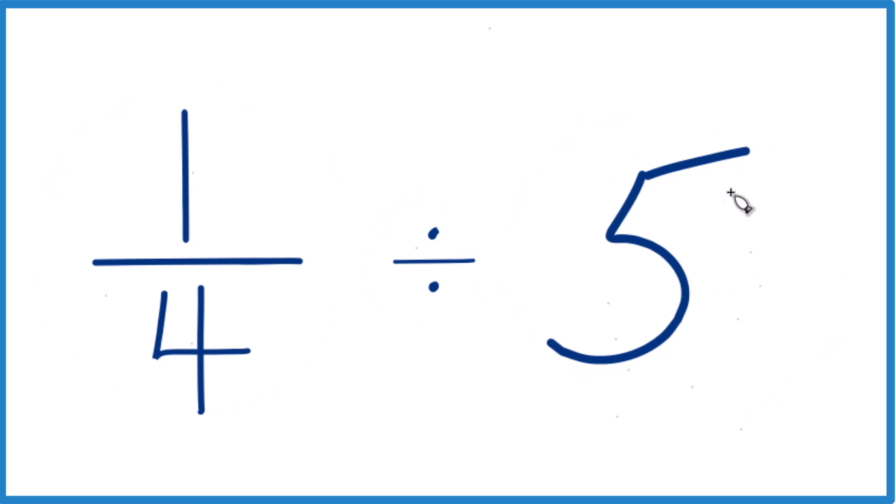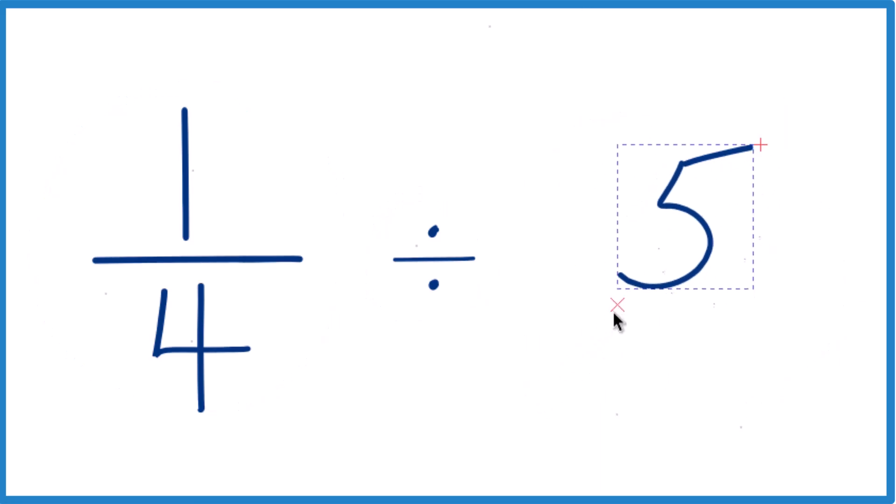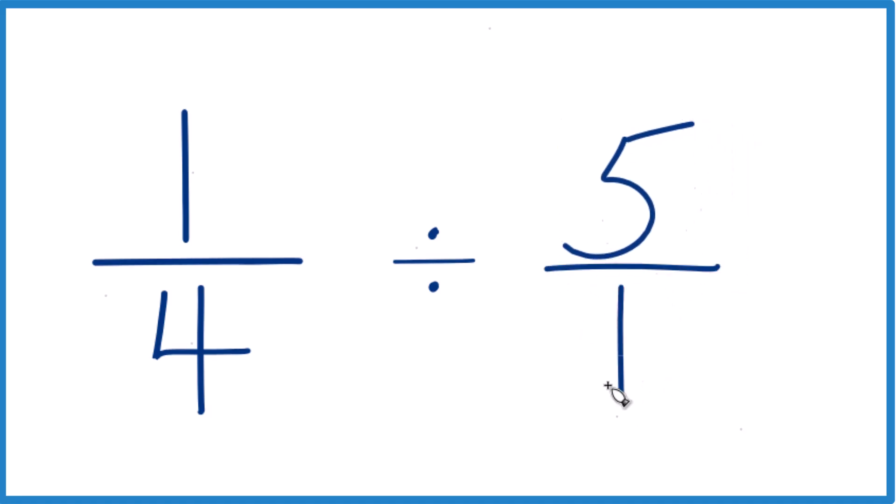So let's take the 5 here. Instead of 5, let's call it 5 over 1. Because 5 divided by 1, that's still 5. It hasn't changed, it's just lined up better here.